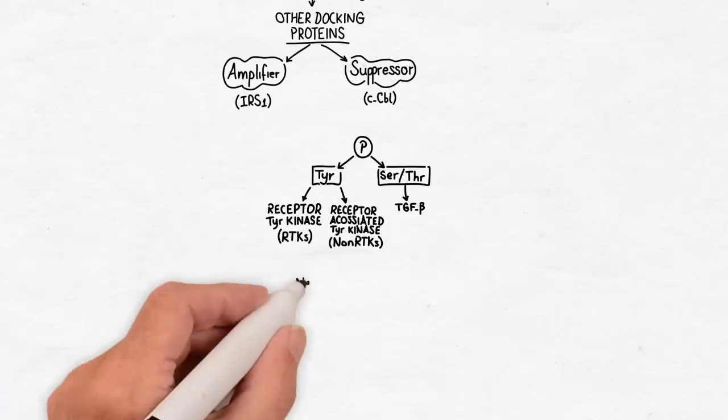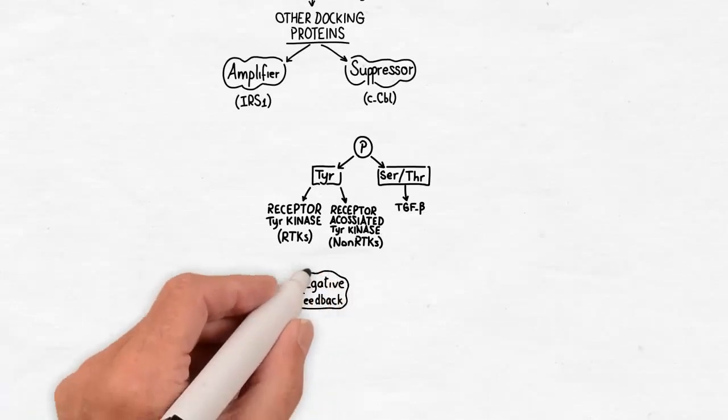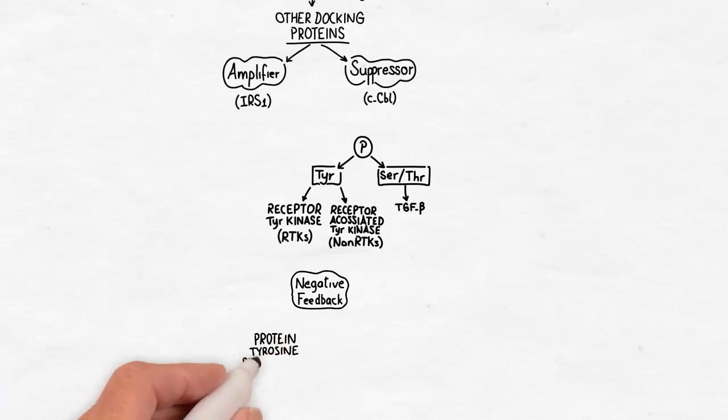Tyrosine phosphorylation is regulated by two major negative feedback mechanisms. The first is the protein tyrosine phosphatases, commonly known as the PTPs, and these remove the phosphate group from activated proteins making them inactive. The other major mechanism is the receptor endocytosis.